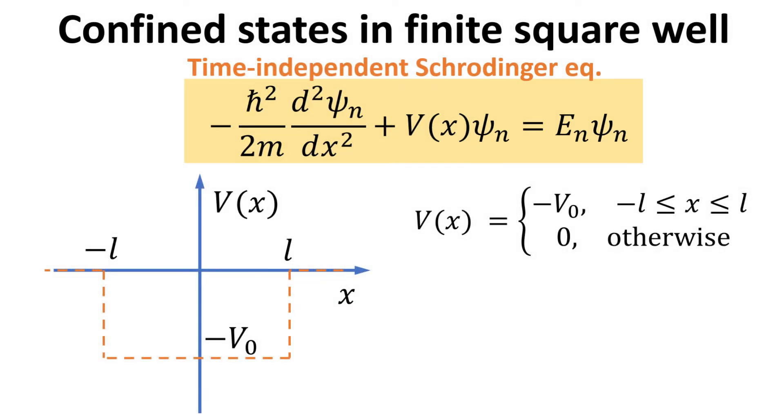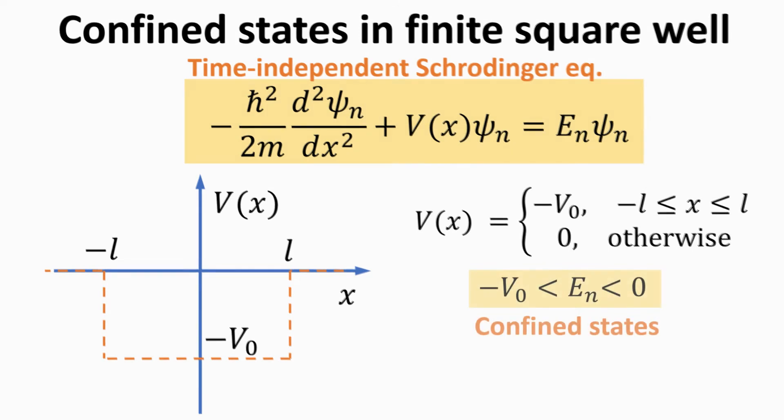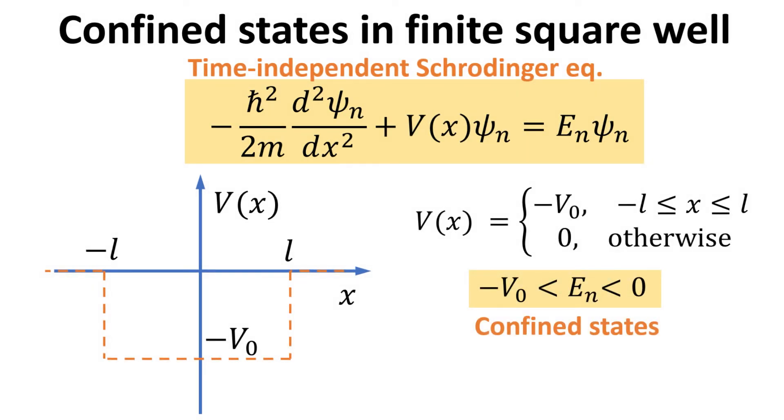Here, the potential V defines a well for x between minus l and plus l, with a potential depth given by V0. Since we are interested in the solutions of the confined states, we focus on eigen solutions where the eigenenergies En are less than zero.